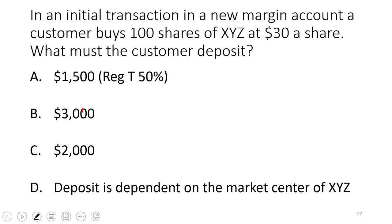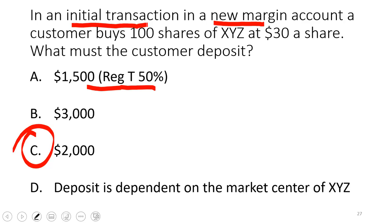Here's the other version of the new margin account trick — high probability on the SIE and Series 7. If you buy 100 shares in a new margin account at $30 (totaling $3,000, which is between $2,000 and $4,000), the required deposit is $2,000 — not the Reg T 50%. Be prepared for the phraseology: 'initial transaction' or 'new margin account.' In an existing margin account it would be half (50%).